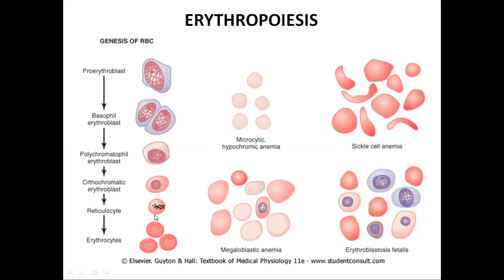In the reticulocyte stage, a fine reticular network composed of RNA and remnants of organelles is present. Reticulocytes leave the bone marrow and enter the circulation, where they remain for one to two days before developing into mature RBCs or erythrocytes.